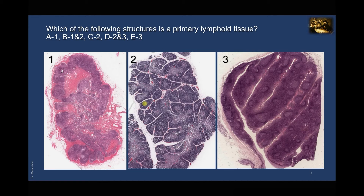Which of the following structures is a primary lymphoid tissue? A primary lymphatic organ provides an environment for stem cells to divide and mature into B and T lymphocytes. The red bone marrow gives rise to mature B cells, while the thymus gland is the site where pre-T cells from red bone marrow mature. So a primary lymphatic organ is either bone marrow or the thymus.